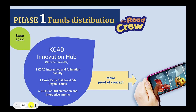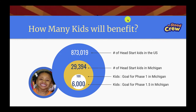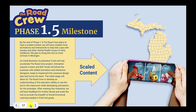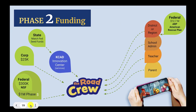They're really looking for a timeline for your phases — what will you have complete by a certain date? How many kids will benefit? Starting with 100 in Michigan, then kicking off to 6,000, then the number of Head Start kids in Michigan, then the number of Head Start kids in the U.S. — we're exponentially expanding to kids that need our help. Then scaling, working on more funds distribution and phase two funding. The KCAD Innovation Center is a part of this.